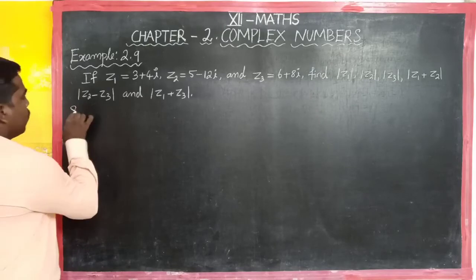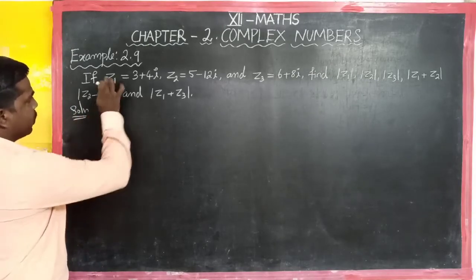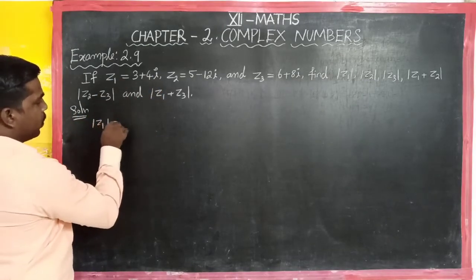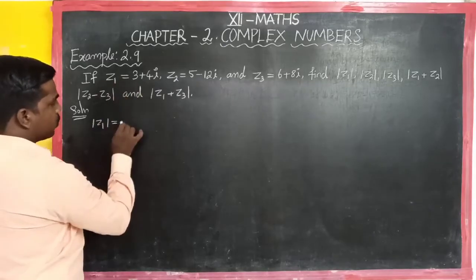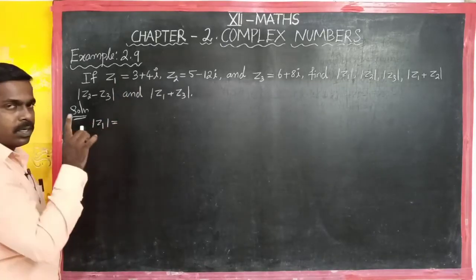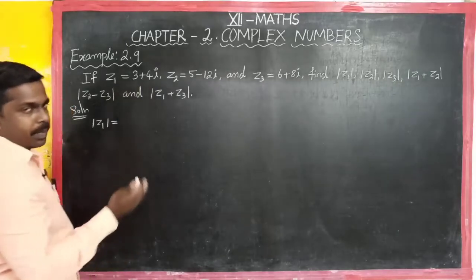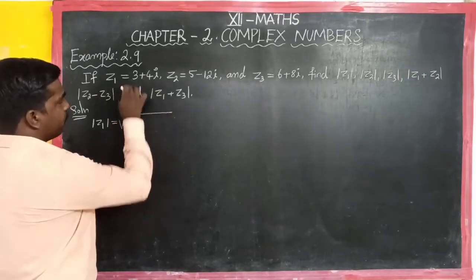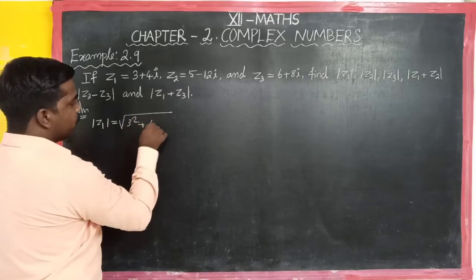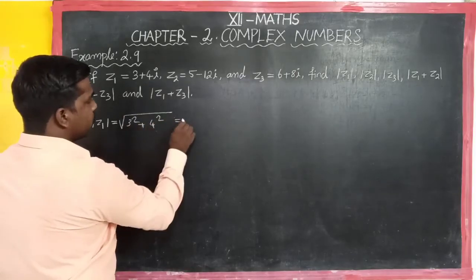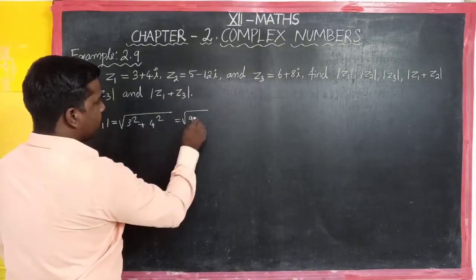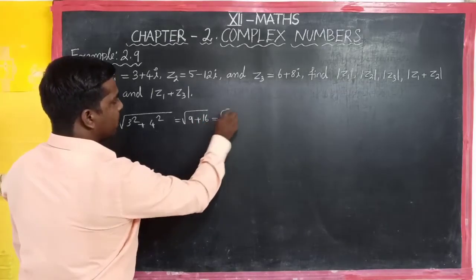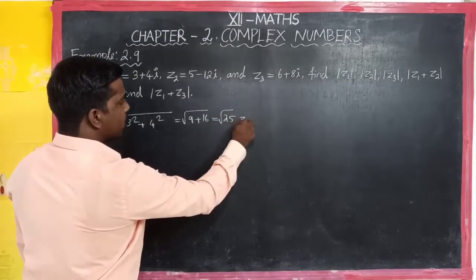So modulus of z1: the formula is square root of the real part squared plus the imaginary part squared. So modulus of z1 equals square root of 3 squared plus 4 squared. Three squared is 9, and 4 squared is 16. So square root of 25, which equals 5.